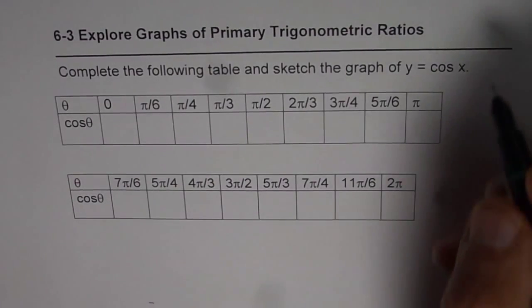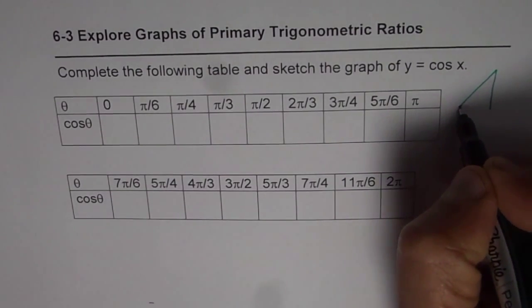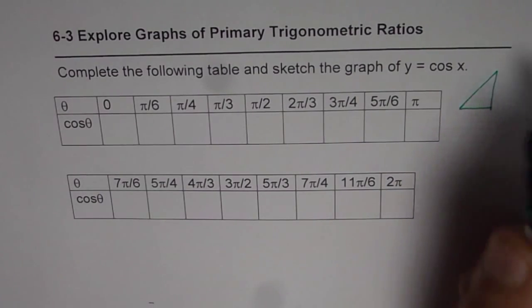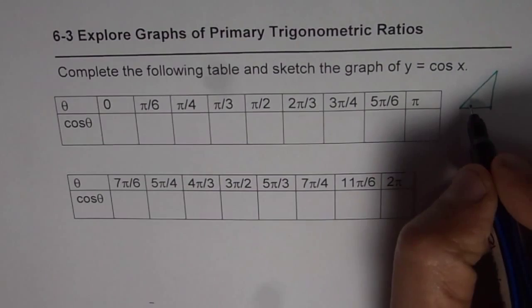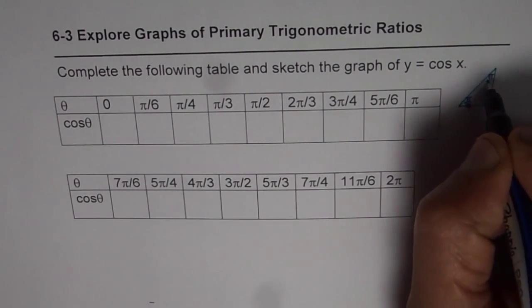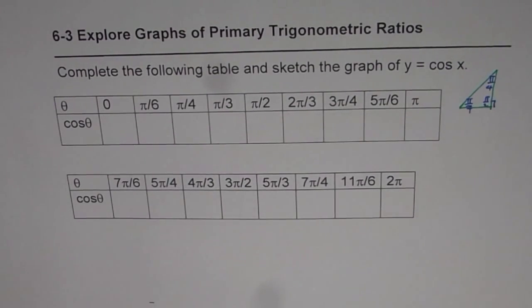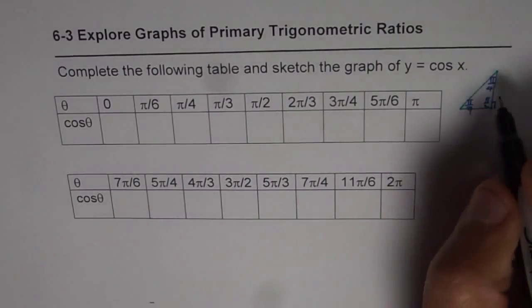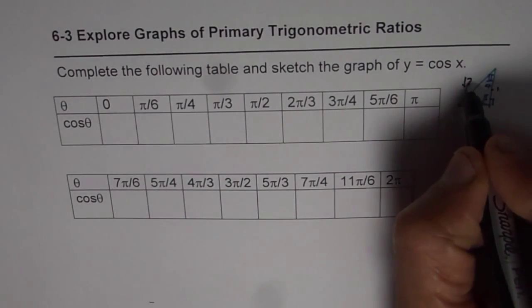We are always referring to two special triangles. One of them is the 45-45-90 triangle, which in radians is pi by 4, pi by 2, pi by 4. Two angles are the same, therefore two sides will be the same. Let these sides be 1 each — in that case the hypotenuse is going to be square root of 2.